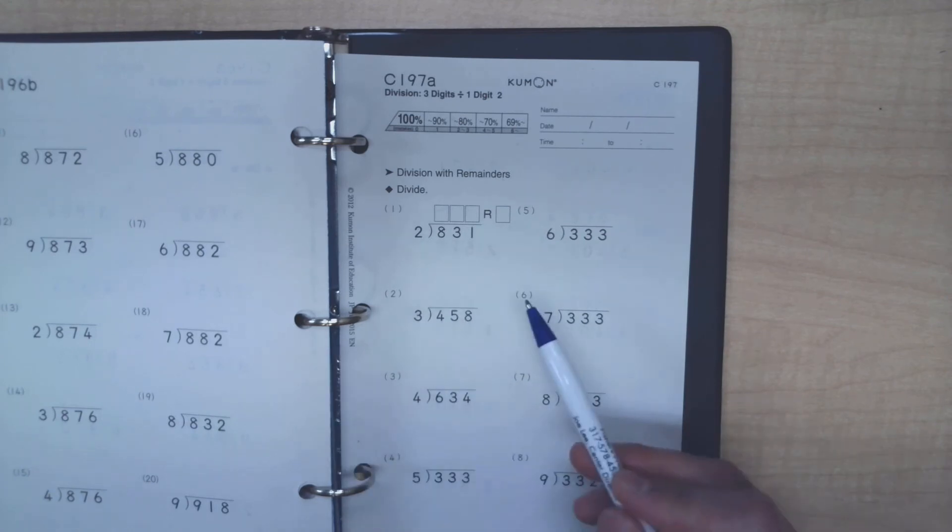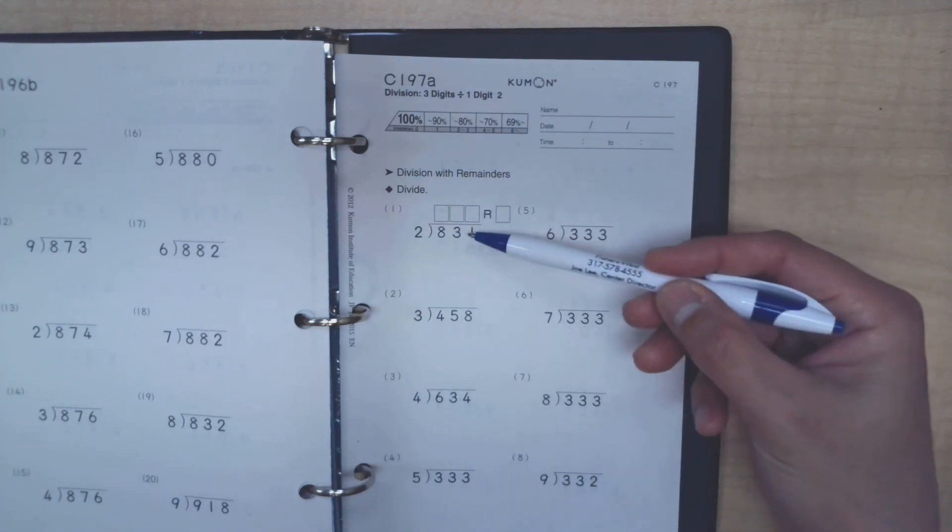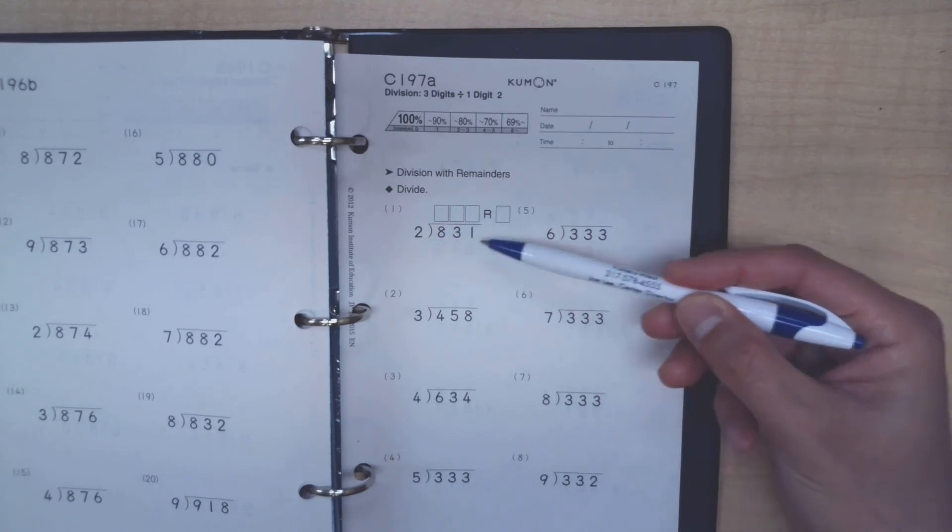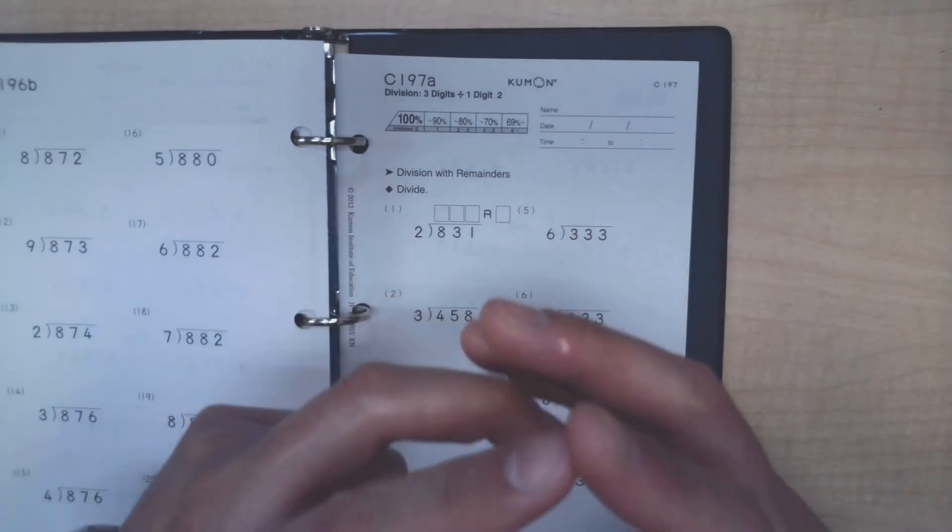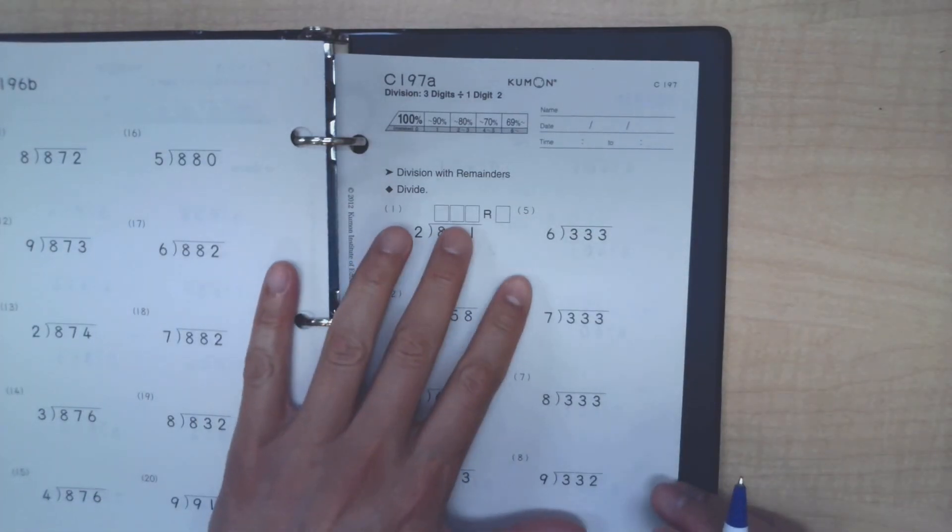We've done divisions horizontally, vertically, one digit, two digit, and three digits. We also have done the divisions with remainders. This is a time we just have to collect all those things together and put them into a single problem.